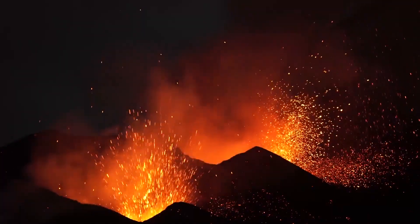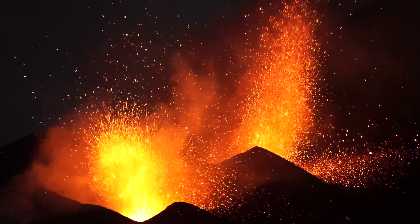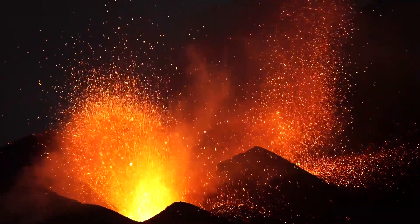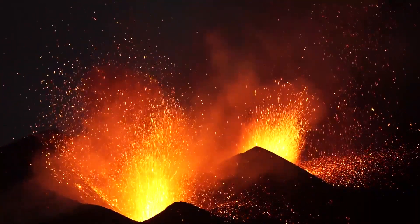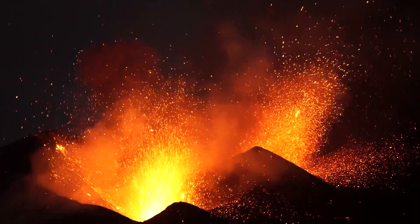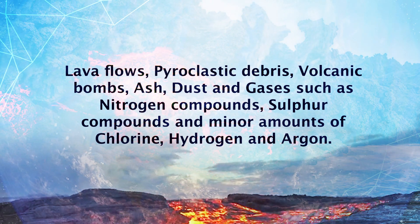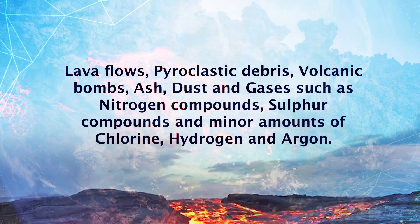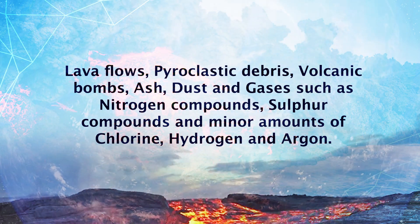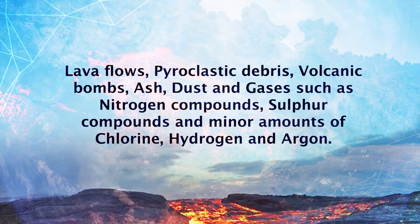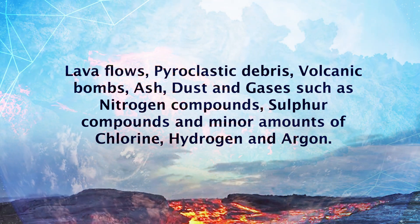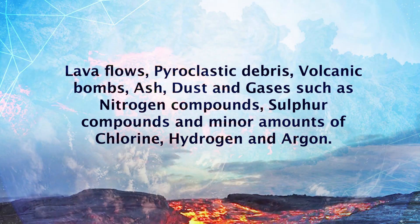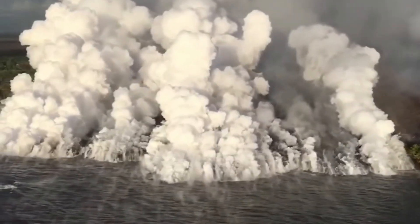Not only lava but there are lots of other things that come out during a volcanic eruption. The material that reaches the ground includes lava flows, pyroclastic debris, volcanic bombs, ash and dust, and gases such as nitrogen compounds, sulphur compounds and minor amounts of chlorine, hydrogen and argon.